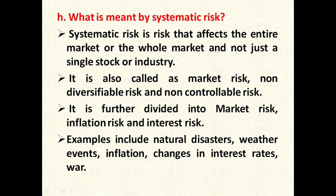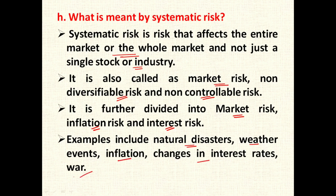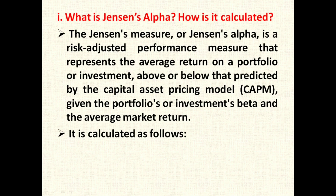What is meant by systematic risk? Systematic risk is the risk that affects the entire market and not just a single stock or industry. It is also called market risk, non-diversifiable risk, and non-controllable risk. It is further divided into market risk, inflation risk, and interest rate risk. Examples include natural disasters, weather events, inflation changes, interest rate changes, and war. Unsystematic risk, on the other hand, is controllable, diversifiable, and related to one specific company or industry.